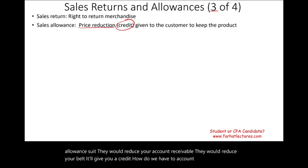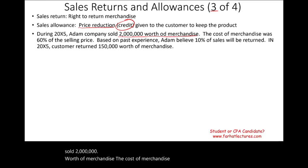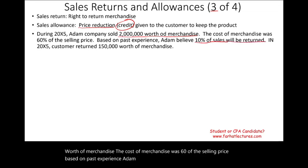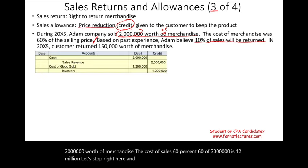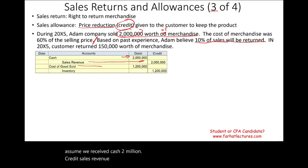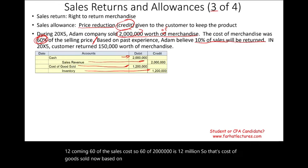Example: During 20X5, Adam Company sold $2 million worth of merchandise. Cost of merchandise was 60% of selling price ($1.2 million). Based on past experience, Adam believed 10% of sales ($200,000) would be returned. We record the sale: debit cash $2 million, credit sales revenue $2 million; debit cost of goods sold $1.2 million, credit inventory $1.2 million. During 20X5, customers actually returned $150,000 worth of merchandise.